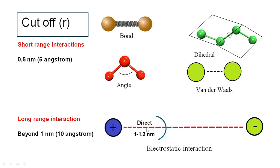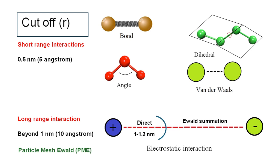Coulombic summation is used to calculate the potential energy from electrostatic interaction. Up to a cutoff distance of around 1.0 to 1.2 nanometers, the electrostatic potential energy is calculated directly through Coulombic summation. Beyond this range, a theoretical procedure known as Ewald summation is used to calculate the electrostatic potential energy. That is why the method known as Particle Mesh Ewald is used to calculate the potential energy from electrostatic interaction.